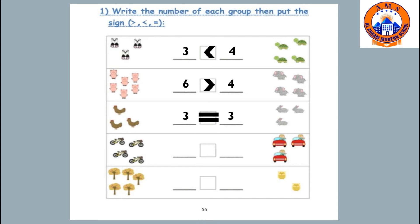How many bikes? One, two, three, four. And how many cars? We have three red cars. So the suitable sign is greater than — four is greater than three.